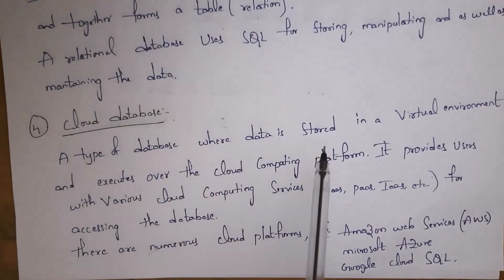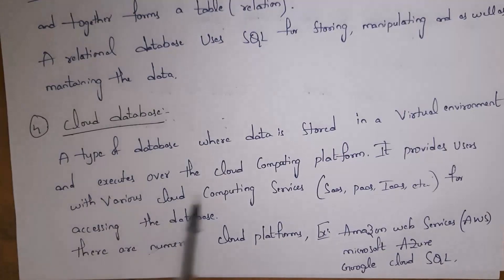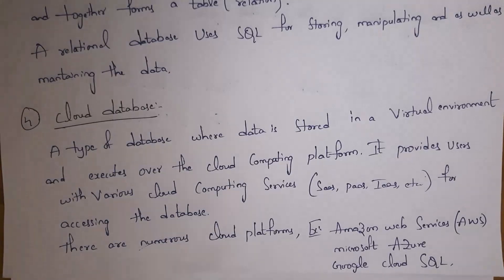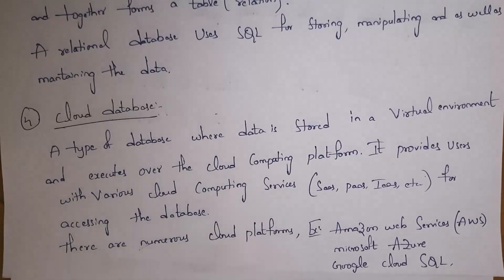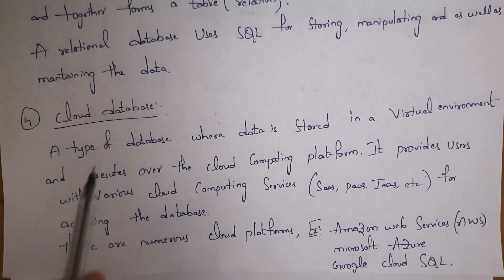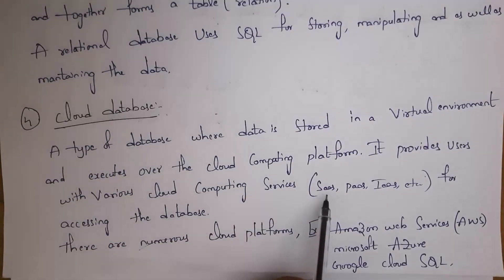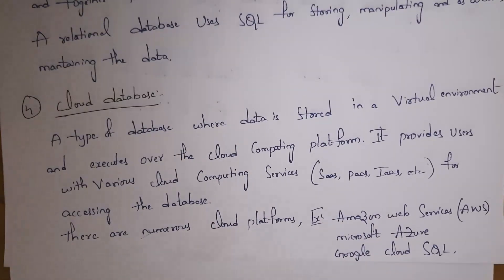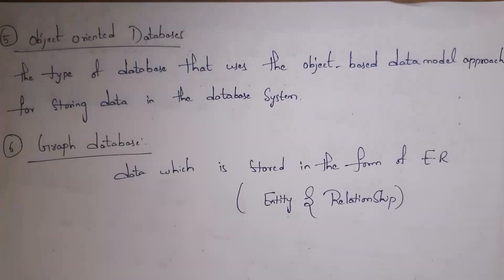A cloud database is a type of database where data is stored in a virtual environment and executes over the cloud computing platform. Virtual environment means the data is shown over the internet. Cloud databases provide various cloud computing services for accessing the database, such as Software as a Service, Platform as a Service, and Infrastructure as a Service. Some examples of cloud platforms are Amazon Web Services, Microsoft Azure, and Google Cloud SQL.